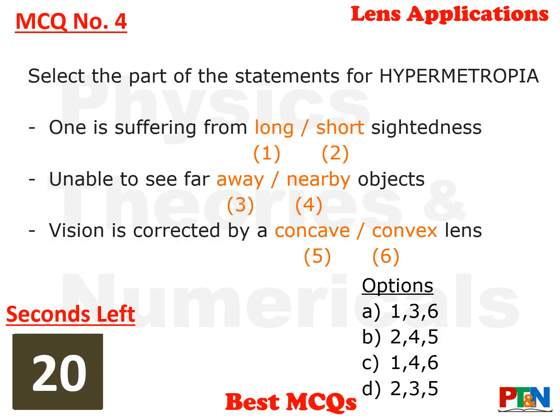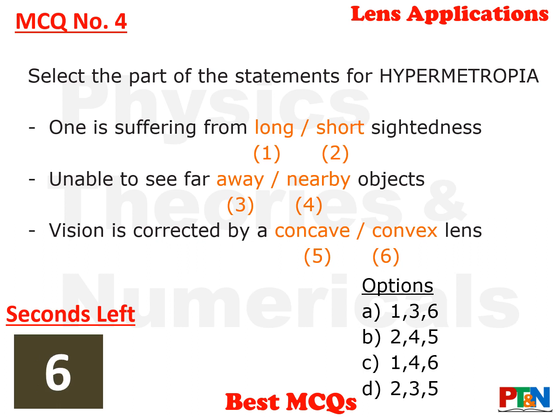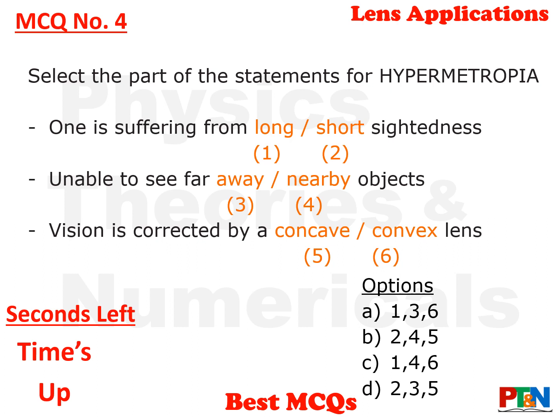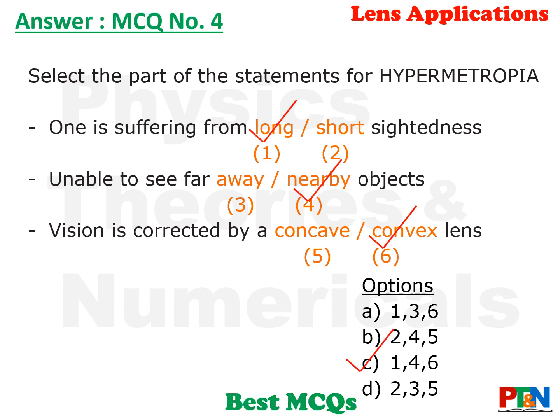Next MCQ: hypermetropia. You need to select the options which are applicable for hypermetropia. You have 20 seconds — your time starts now. Time's up. The correct option is option C; the correct words have been ticked in the sentences. Similar questions can be framed for myopia also.